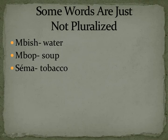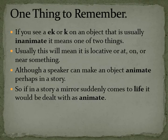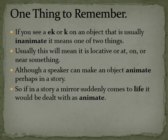If you really want to quantify it, you can just say jash, meaning lots. One thing to remember is if you see an -ek or a -k on an object that is usually inanimate, it means one of two things — usually this will mean that it's locative, which means it's saying that something is at, on, or near something. Although a speaker can also make an object animate, perhaps in a story — so if a story has a mirror that suddenly comes to life, it would be dealt with as animate.